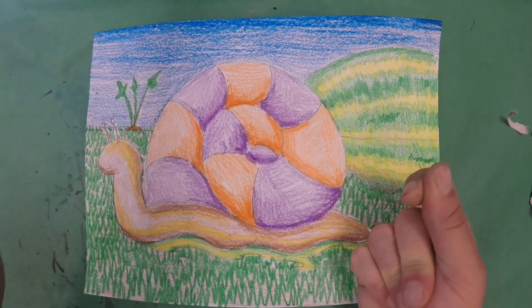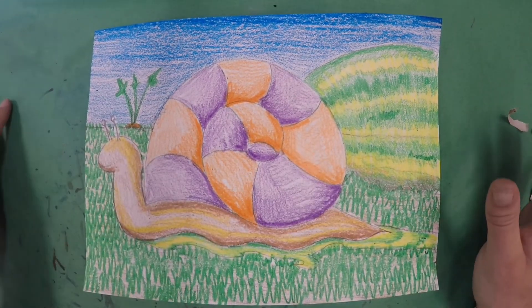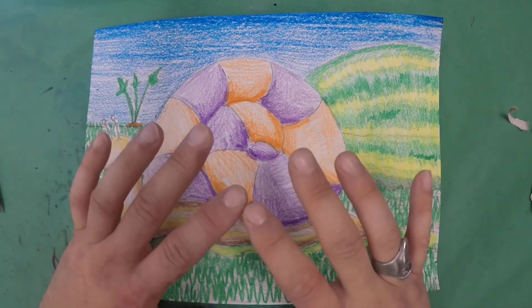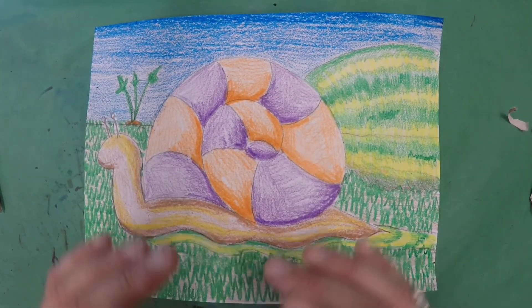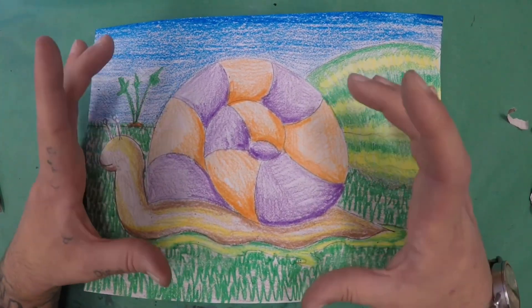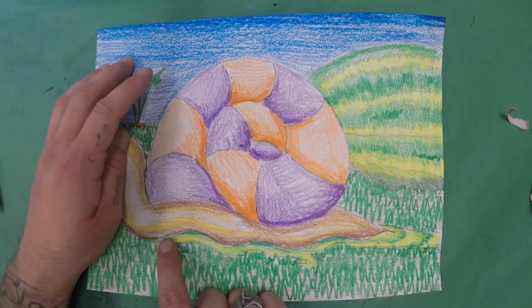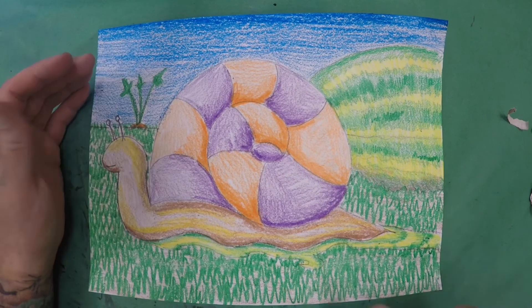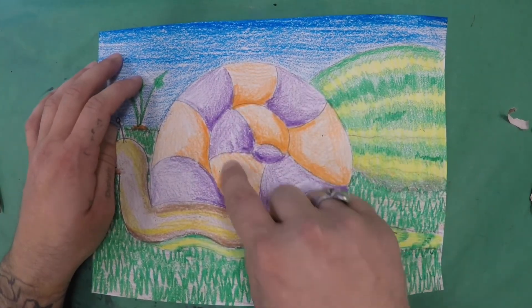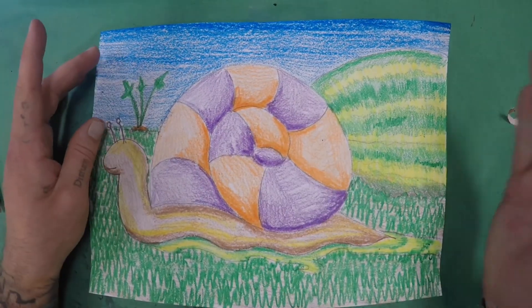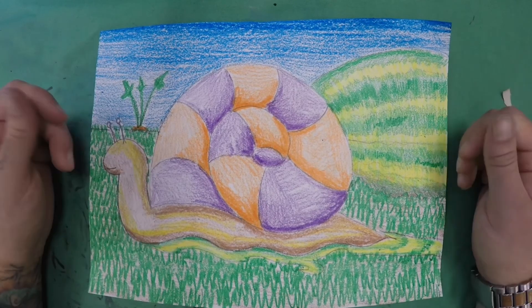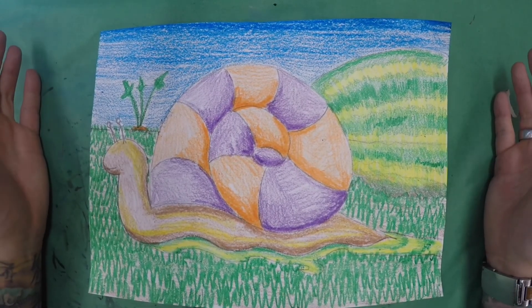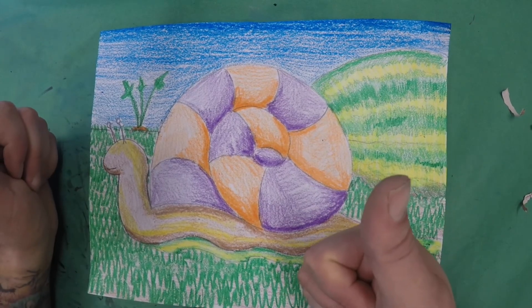And here, my friends, is the finished snail. We have our lines. We have our shapes. We have our colors. We have our textures. We have our emphasis in the middle, big and large. We have our movement created by our slime trail. We have our pattern on the snail's shell. This, my friends, is a finished work of art. Hope you've enjoyed it. Hope you learned something. And as always, happy art and friends.